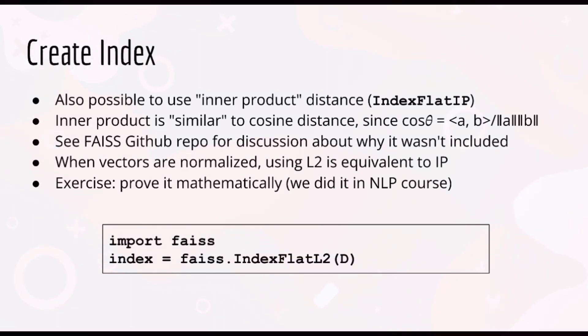The inner product distance is similar to cosine distance, except that the inner product isn't normalized. The cosine distance is essentially the same as the inner product distance but normalized by the lengths of the vectors. There is some discussion on the FAISS GitHub repository about why they decided not to include the cosine distance explicitly, so you can check that out if you're interested. At the same time, this isn't too useful for us anyway, because when your vectors are normalized, which they will be in this course, using L2 distance is equivalent to using cosine distance anyway. You can prove this mathematically, as I did in my original NLP course, but the details are outside the scope of this course. As a challenge, you might want to try to show this yourself.